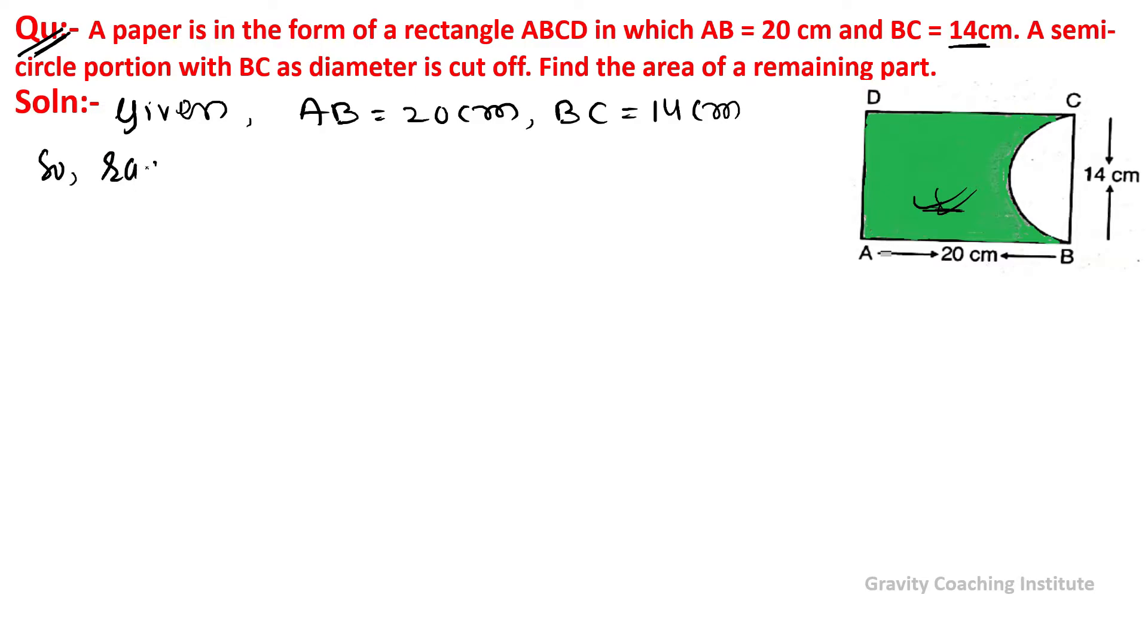So radius of the semicircle equals 14 upon 2, so 7 centimeter.